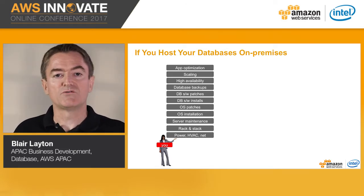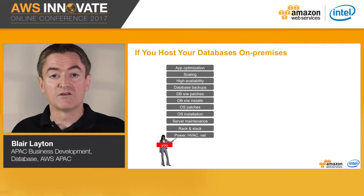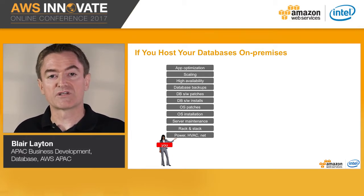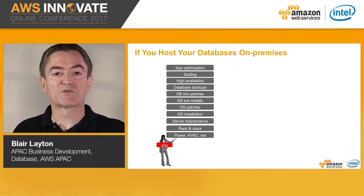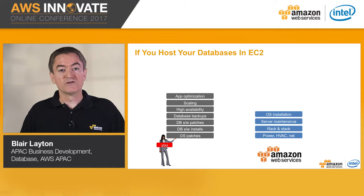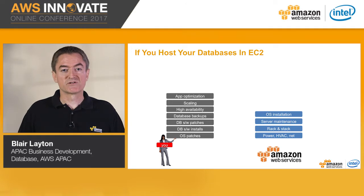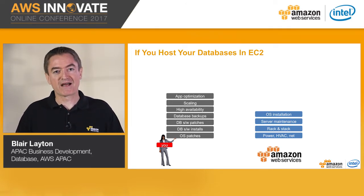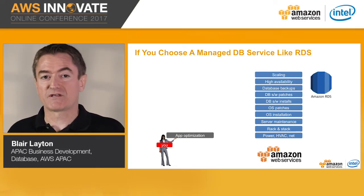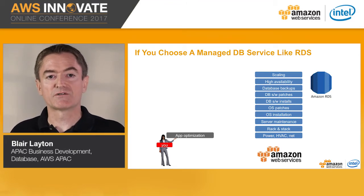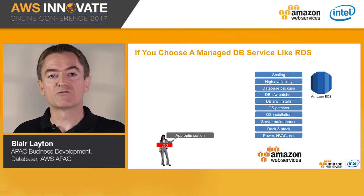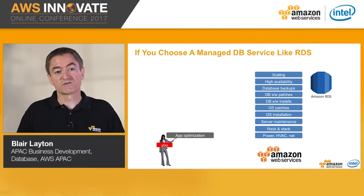Looking at this in another way, here is what you do if you have to host your database on premises — you need to manage all aspects of your environment from power, high voltage air conditioning and networking to application optimization and everything in between. If you host your databases in EC2, AWS can take care of infrastructure components from the data center up to the OS installation, but you still have to handle OS patches, database installation, backups, high availability, scaling and application optimization. If you choose a managed database service such as Amazon RDS, the only thing you need to worry about is your application optimization, with AWS taking care of everything else.